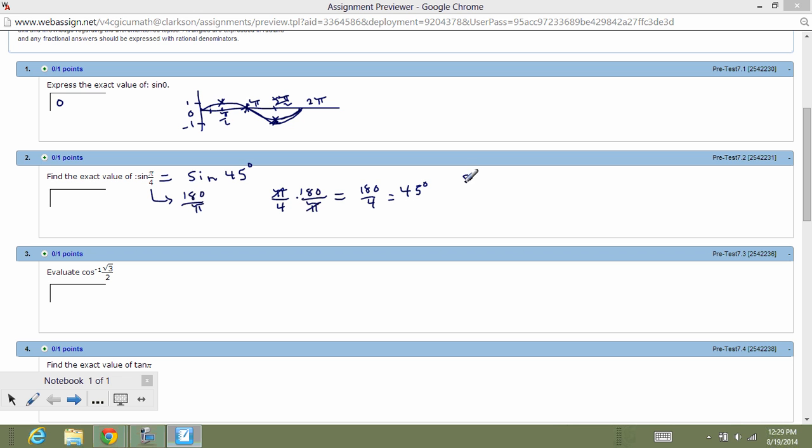A couple other ways you can do 45 degrees or pi over four, you can commit a chart to memory. We talked in one of the videos earlier about doing sine, cosine, tangent, perhaps on the vertical and then running across the top with your common angles of zero, 30 degrees, 45 degrees, 60 degrees, and 90 degrees.